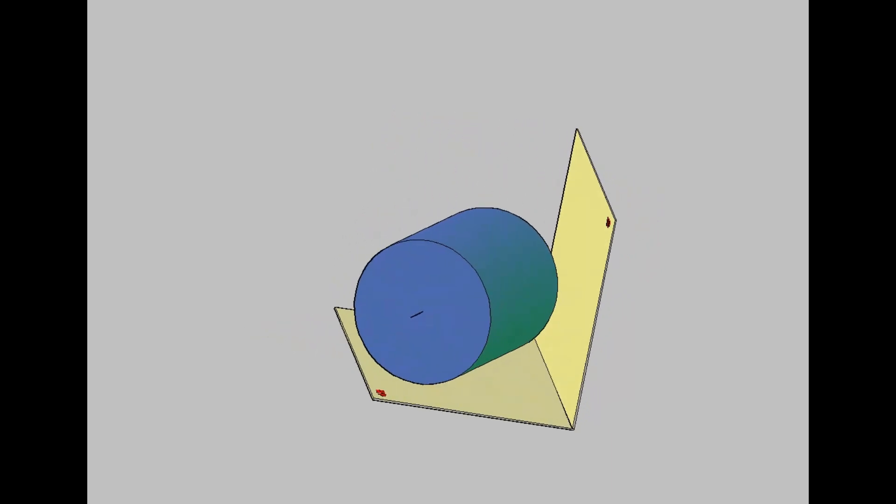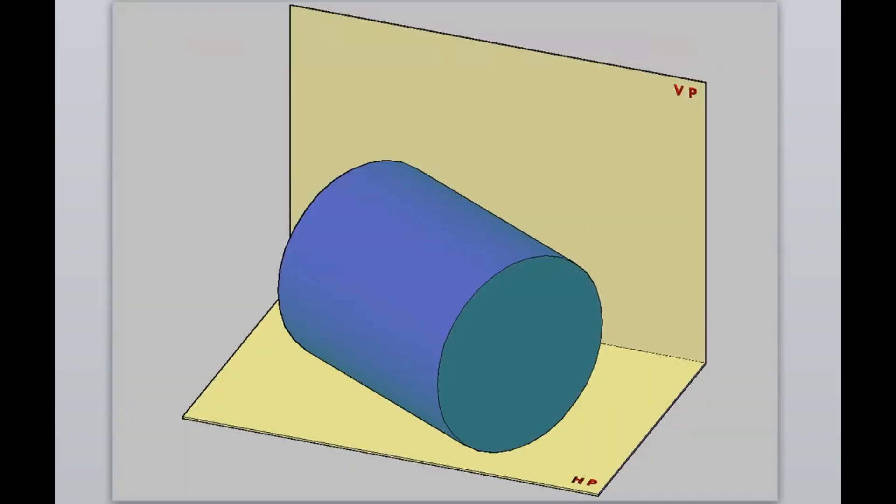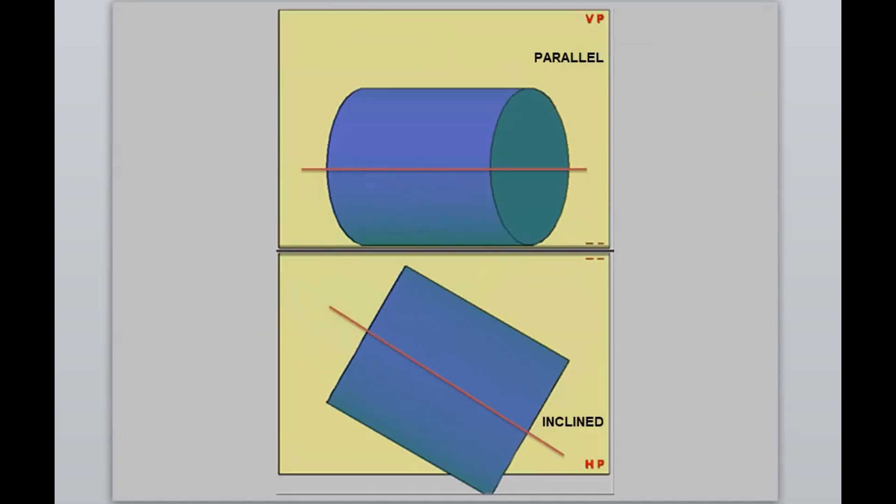In this problem, the axis of the cylinder is inclined to VP. Since it is lying on the ground, the axis will be parallel to HP. A cylinder does not have any base edges, base corners, longer edges, or rectangular faces. The cylinder is lying with its generator.